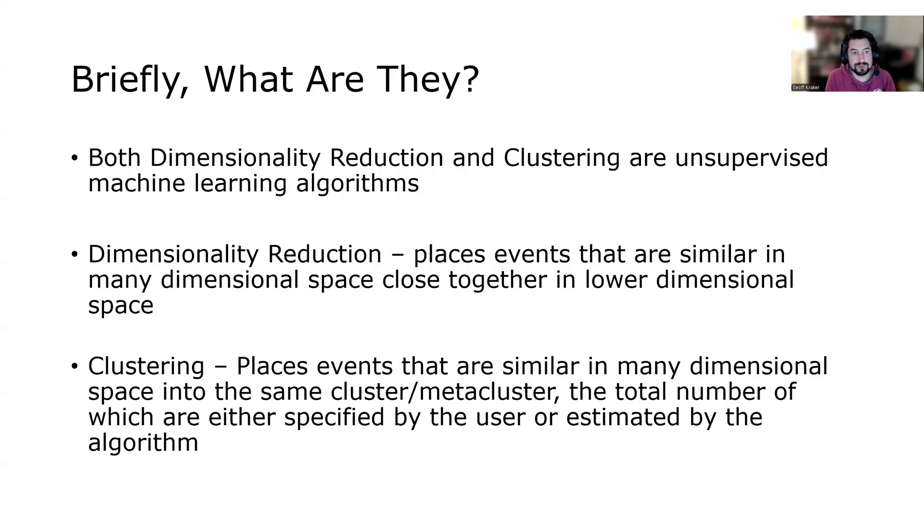So briefly, first, what are they? Both dimensionality reduction and clustering are unsupervised machine learning algorithms. Dimensionality reduction places events that are similar in many-dimensional space close together in lower-dimensional space, and clustering places events that are similar in many-dimensional space into the same cluster and meta-cluster, and the total number of these are either specified by the user or specified by the algorithm, depending on which one you choose.